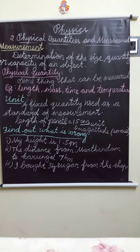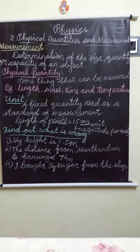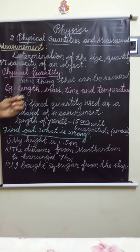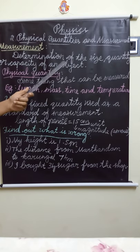What is physical quantity? Something that can be measured is called a physical quantity. What is measurement? The determination of the size, quantity or capacity of an object.